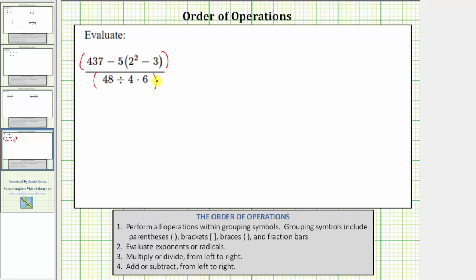Which means to simplify an expression in fraction form, we always simplify the numerator and denominator separately using the order of operations, and then in the last step, we simplify the fraction. So looking at the numerator,